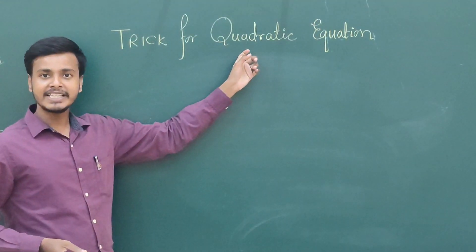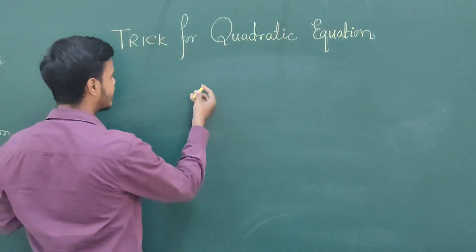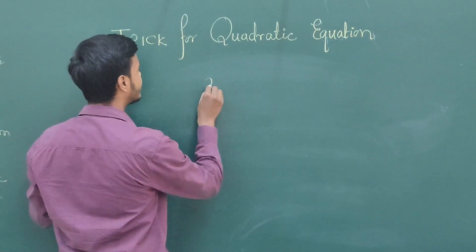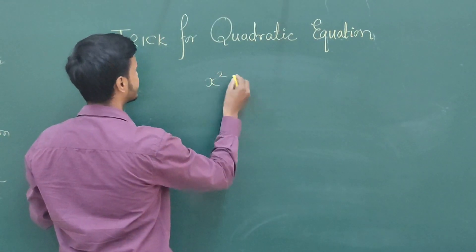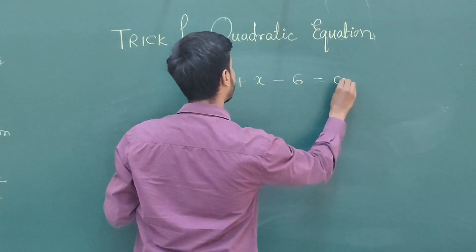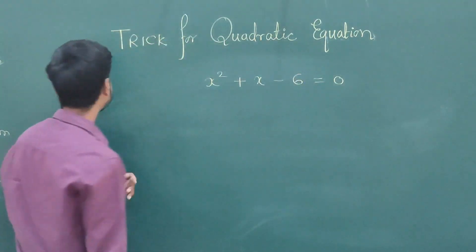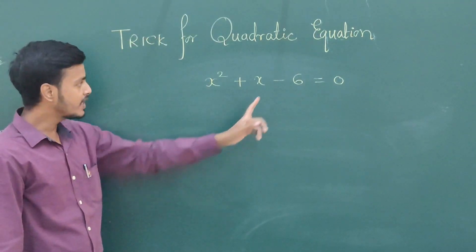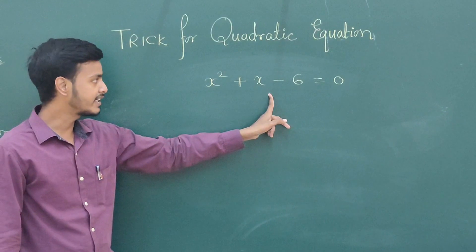You know what is a quadratic equation? A quadratic equation is an equation of the form like this: x squared plus x minus 6 equals 0. Now we have to find the root of this quadratic equation.